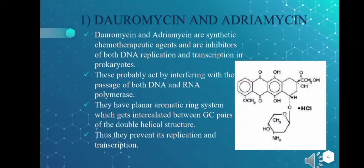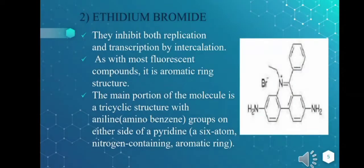The planar aromatic rings get intercalated between GC pairs of the double helical structure in the DNA, and thus prevent its replication and transcription. The second inhibitor of DNA replication is ethidium bromide. It inhibits both replication and transcription by intercalation. As with most fluorescent compounds, it has an aromatic ring structure — the main portion being a tricyclic structure with aniline groups on either side.